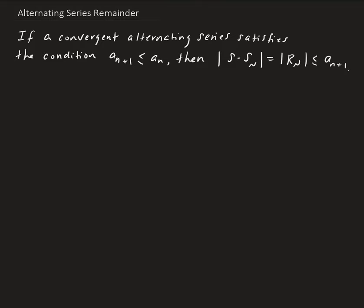In this video, I'm going to prove the alternating series remainder. If we have a convergent alternating series, the condition is that the (n+1)th term has to be less than or equal to the nth term, and the limit of the nth term has to go to zero. Then the absolute value of the difference between the actual sum S and the nth partial sum — which is the residual — is going to be less than or equal to the (n+1)th term. We're going to prove this result.